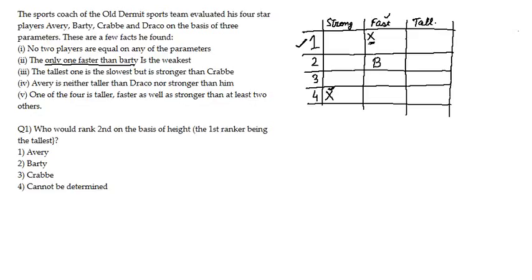The third statement: the tallest one is the slowest but is stronger than Crab. So let the tallest person be Y. Y is the slowest. This also means Crab should not be the tallest or the slowest, so Y cannot be C. B is already placed in the speed column, so B cannot be Y either. The only places left for Y are A or D.